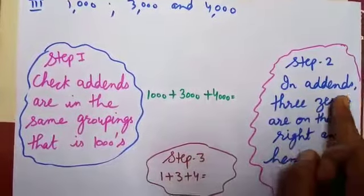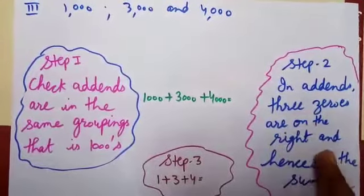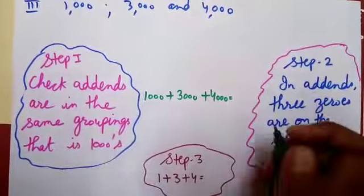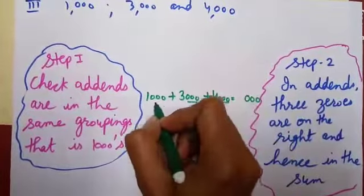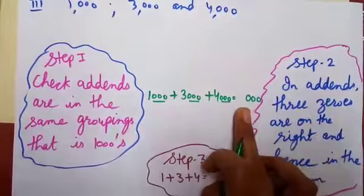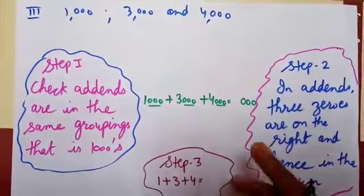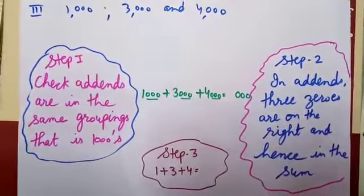In the addends, three zeros are on the right, hence in the sum, I will write three zeros here. So I write the zeros on the right, and now the third step.